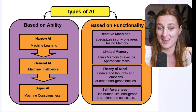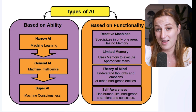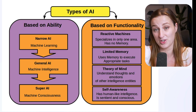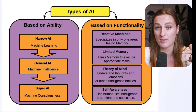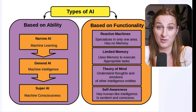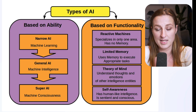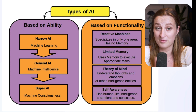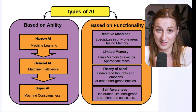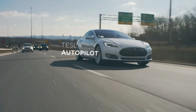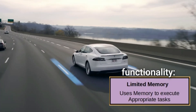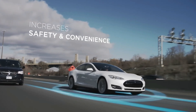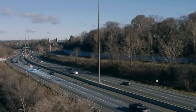The first thing to know is that there are different types of AI. We classify AI into two types: one is based on ability and one is based on functionality. This confuses a lot of people because some aspects of the same AI can overlap both types. For example, Tesla Autopilot is the type of limited memory AI based on functionality, but based on ability it would be narrow AI.